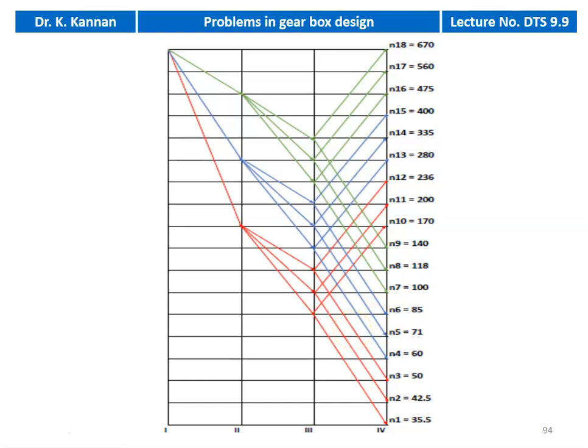The structural diagram gives the number of gears on each shaft and the methodology for obtaining the 18 speeds at the driven shaft. The number of gears on one shaft should generally not be more than 3, though in exceptional cases it may be 4. For 18 speed, you have to carefully draw the structural diagram and the speed (ray) diagram so they are identical.